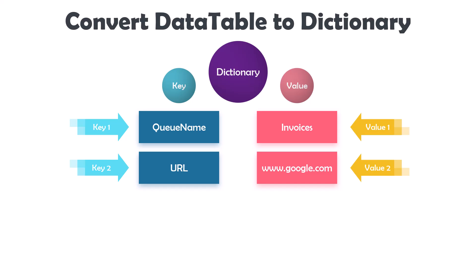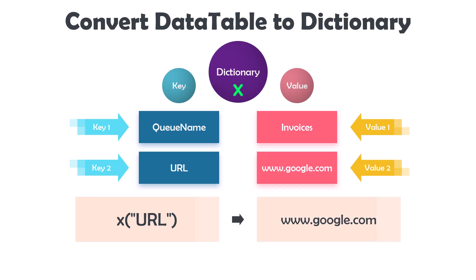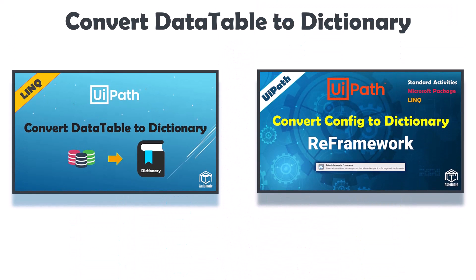Normally we already know the key and want to get the value of that key. For example, I already know that I have a key with the name URL, but I don't know which URL I have. To get the URL I have to use the key. Assume the dictionary variable has the name x — to get the URL I use the variable x with the key URL. As a result for this expression I will get the URL value. For more details about dictionary please check the following two videos.